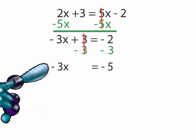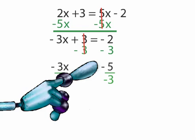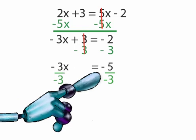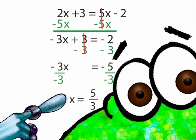To get rid of the negative 3 in front of the x, we divide both sides by negative 3. Negative 3 over negative 3 is positive 1. On the other side, negative 5 over negative 3 is positive 5 over 3. Remember, a negative divided by a negative is a positive. So our answer is x equals 5 over 3.